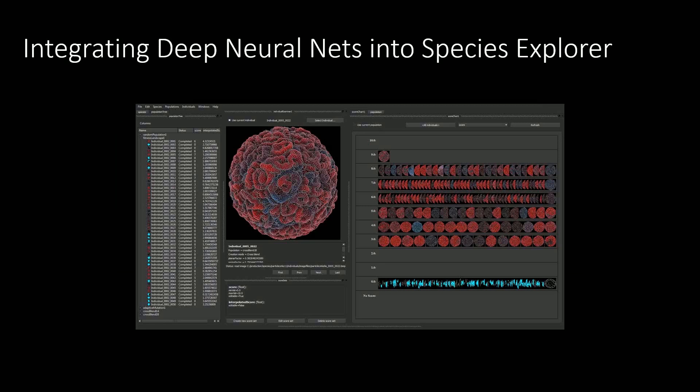Following these encouraging results, we've been working on integrating deep neural nets into Species Explorer in a number of ways. The first is simply using deep neural networks as an option to replace k-nearest neighbours, allowing better estimates of fitness at new points in the genotype space. We have also added the ability to train deep neural networks directly from the Species Explorer UI, including an option to export data in a convenient form to use in Jupyter notebooks and export results back into Species Explorer.